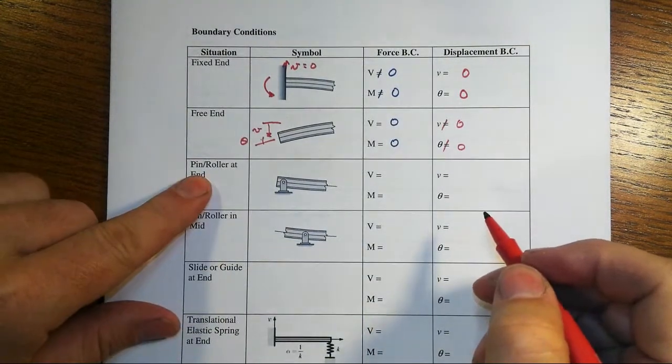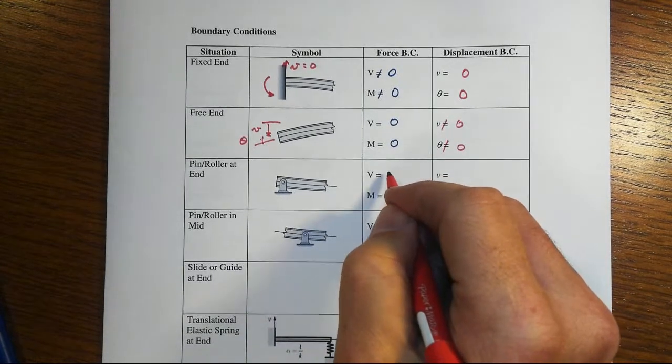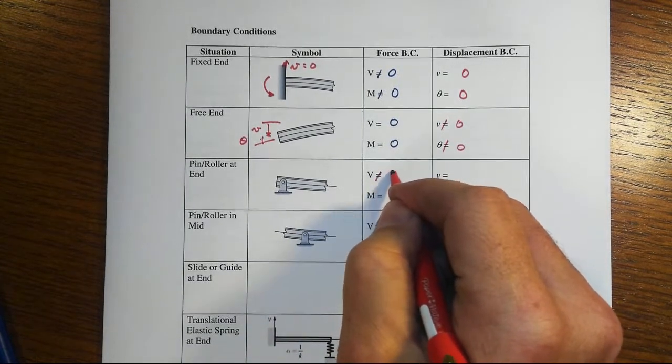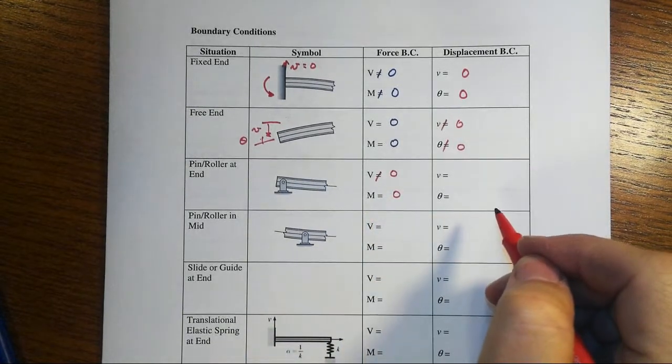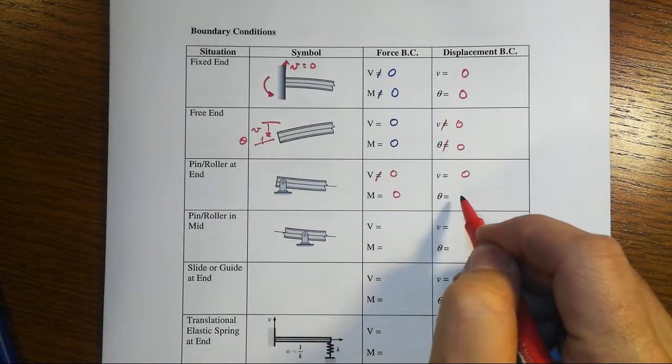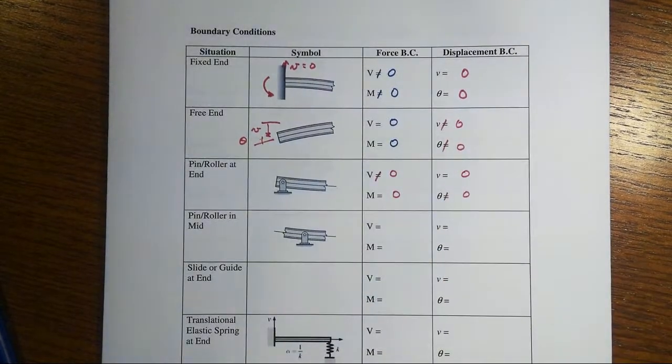So for instance, the pin or the roller at the end, then the shear, of course, would not be zero. It's going to be equal to the reaction, but the bending moment will. And the transverse displacement, well that will be zero, but we'll have a non-zero rotation at that location.